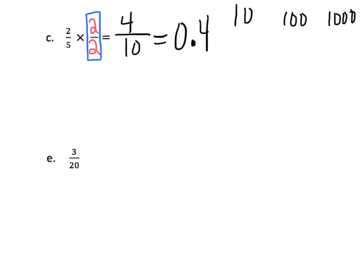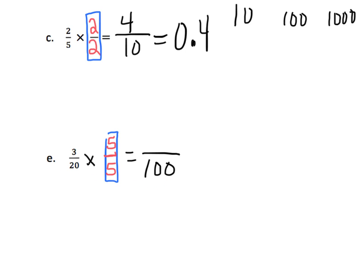Next, we're going to take 3 twentieths and multiply by 1, making the denominator a power of 10. I can see that 20 can easily be turned into 100 by multiplying by 5, so our fraction equivalent of 1 is 5 over 5. That means 20 times 5 is 100, and 3 times 5 is 15, giving us the decimal 0.15.